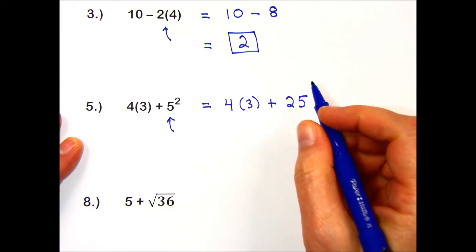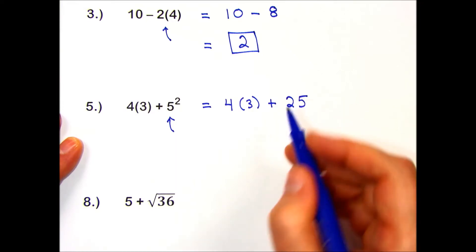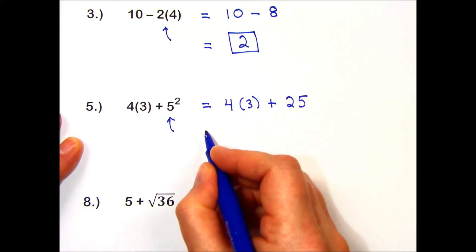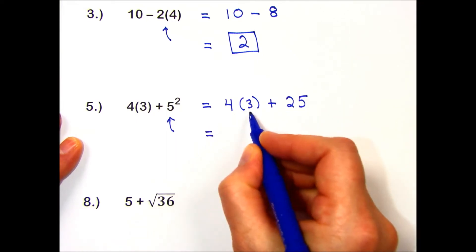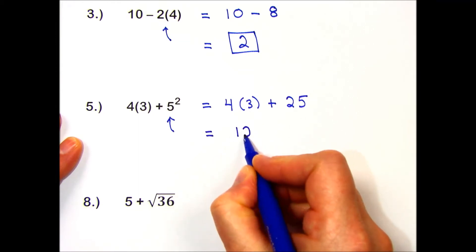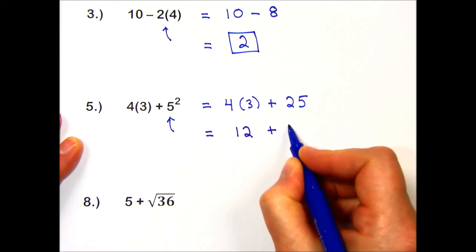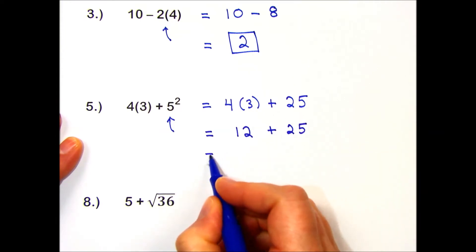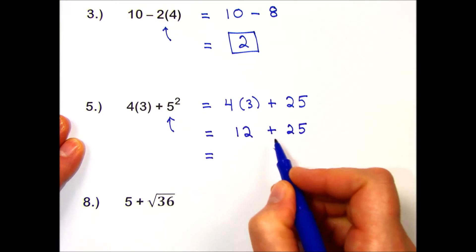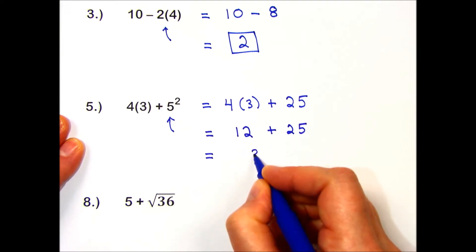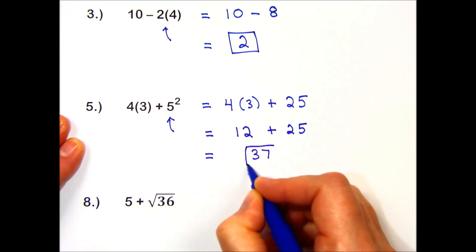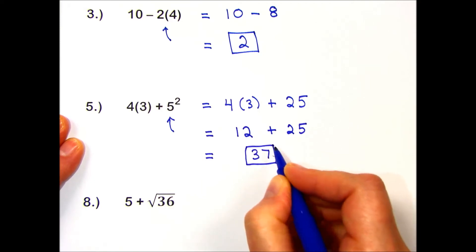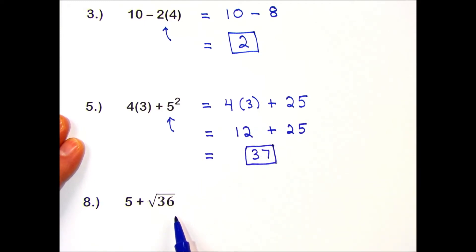Next, I perform multiplications and divisions, and I do have a multiplication here. 4 times 3 is 12. I write that result and bring the rest of my expression along. And last, I can perform the addition. 12 plus 25 is 37. And in number 8, I'm involving the square root, that also needs to come before the addition is performed.